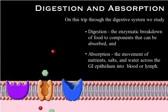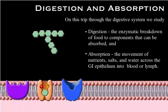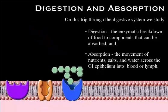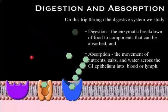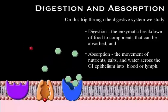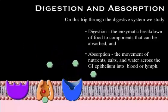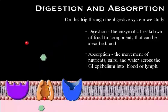On this trip through the digestive system, we will study digestion — the enzymatic breakdown of food to components that can be absorbed — and absorption, the movement of nutrients, salts, and water across the GI epithelium into blood or lymph.